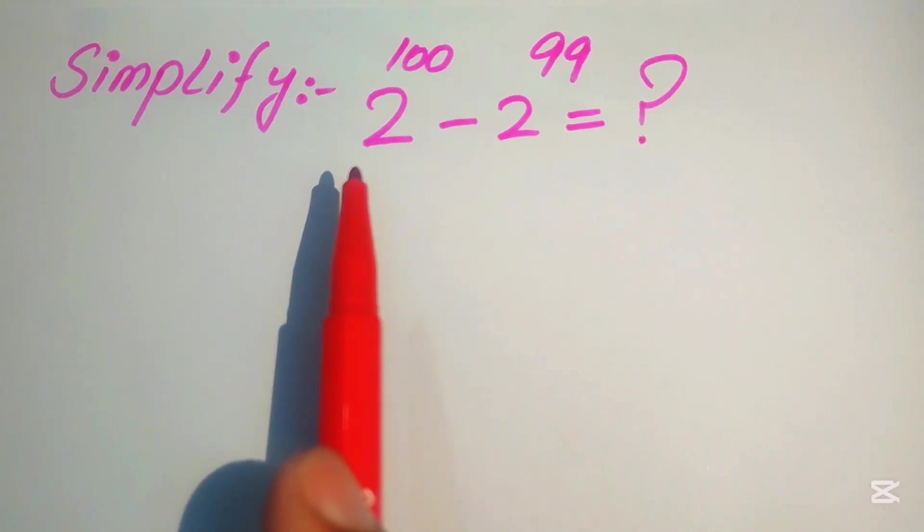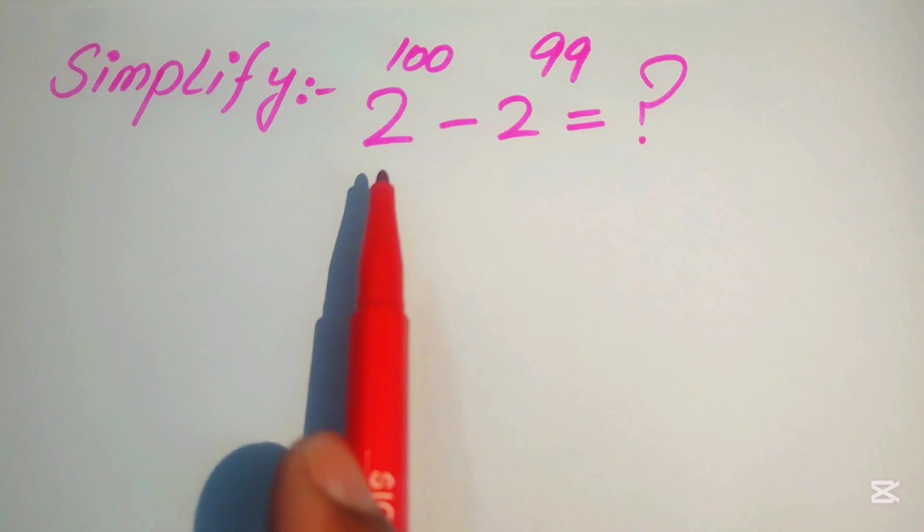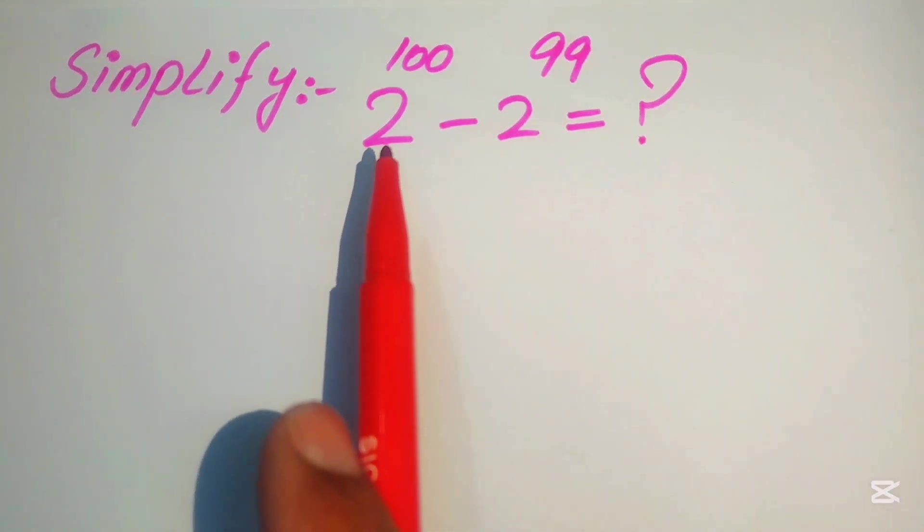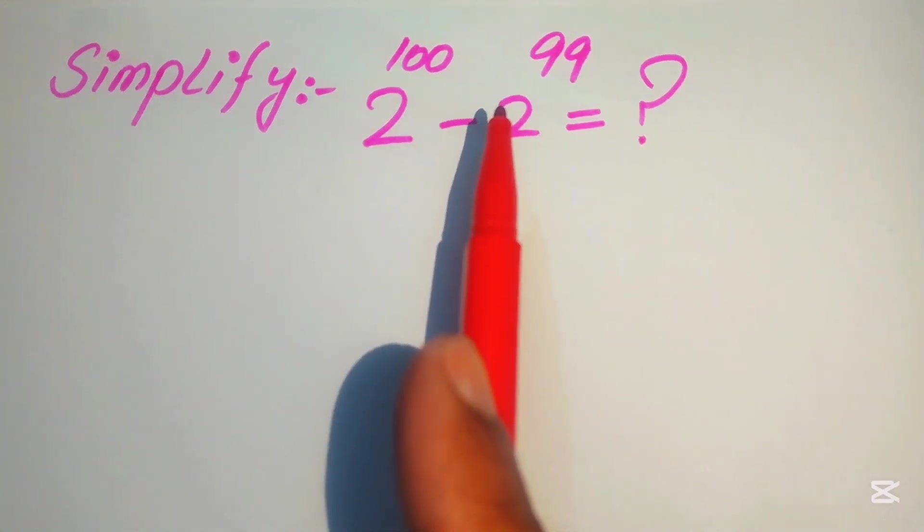Now here there is no rule to subtract this type of number because you see that the bases on these two numbers are same but the exponents are different.